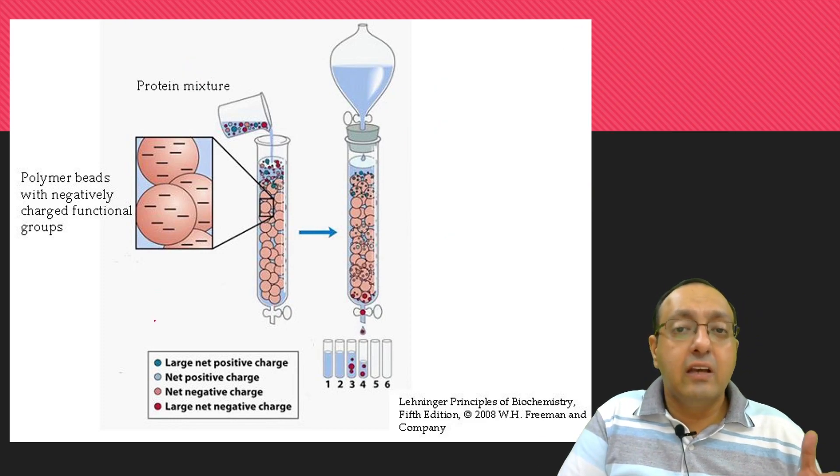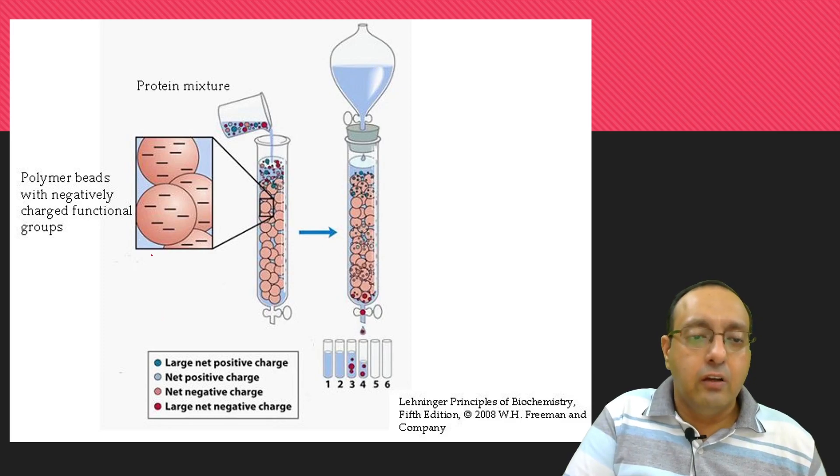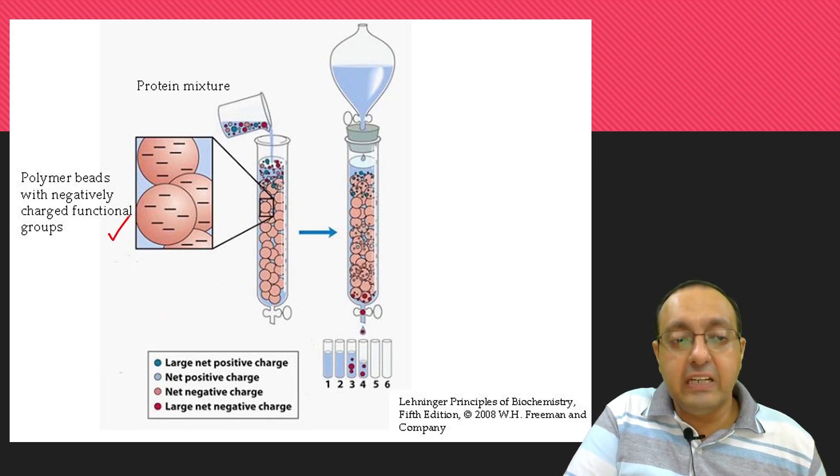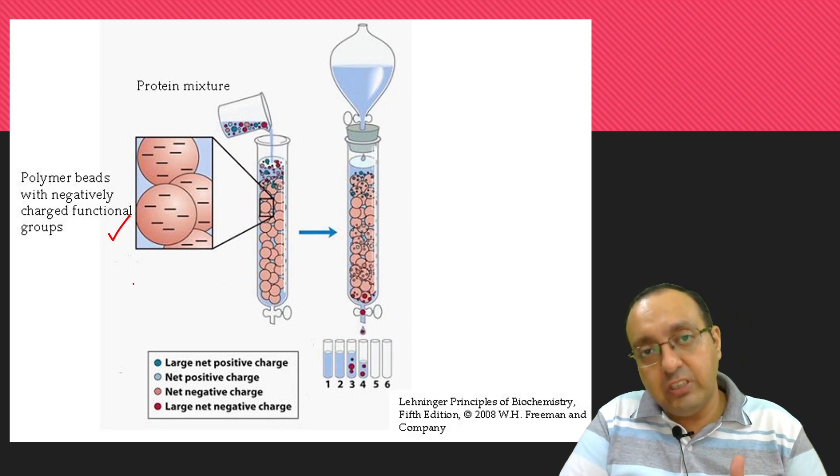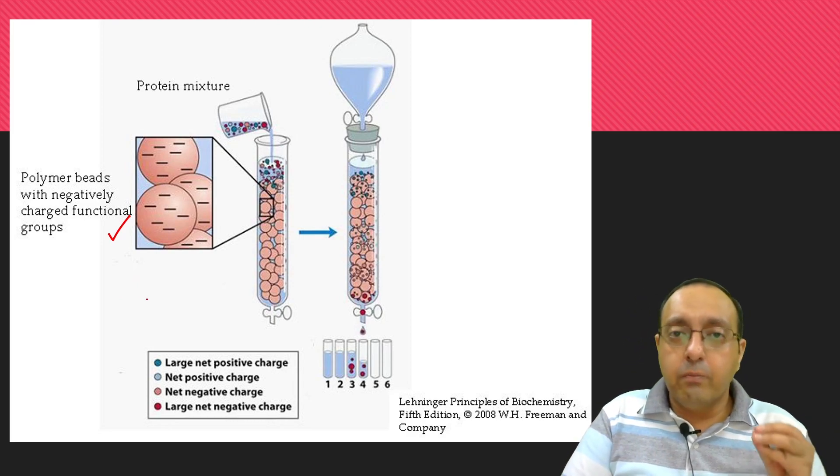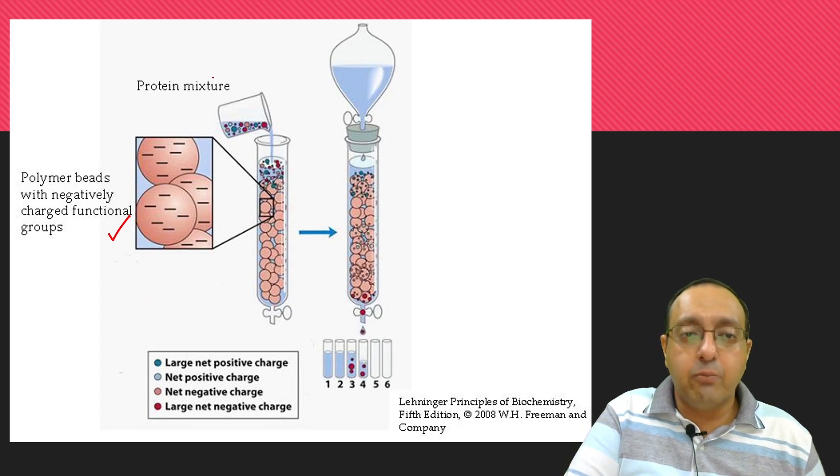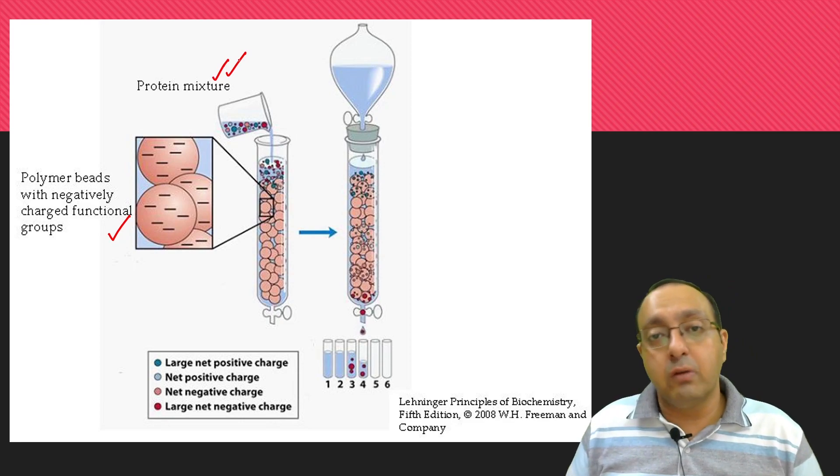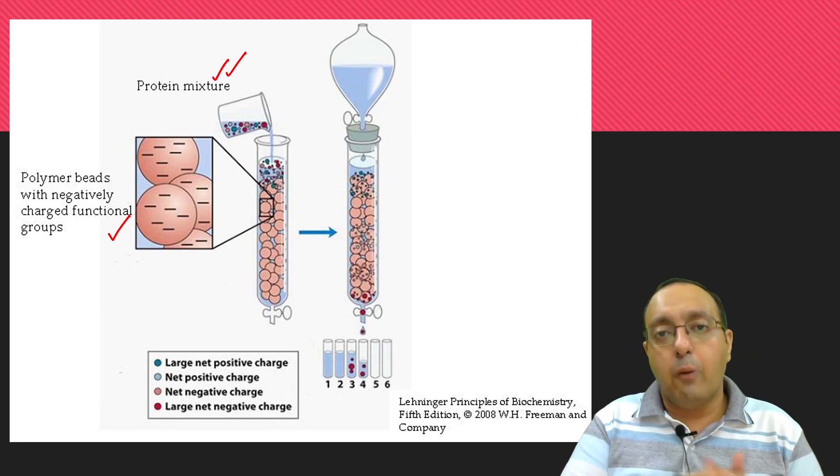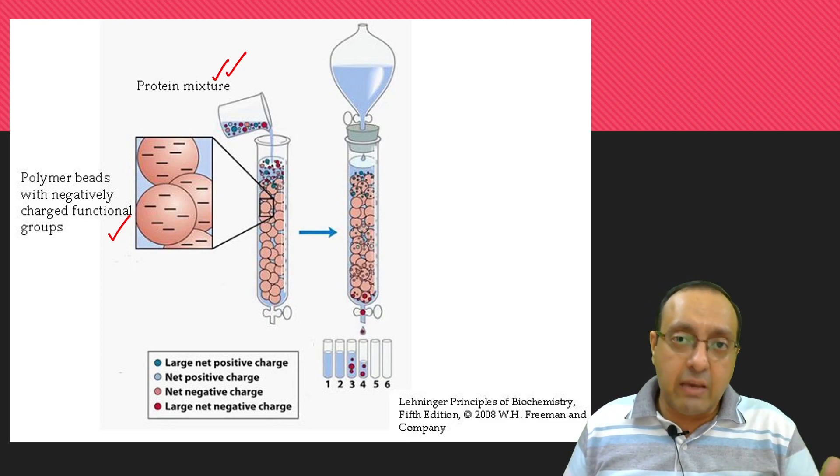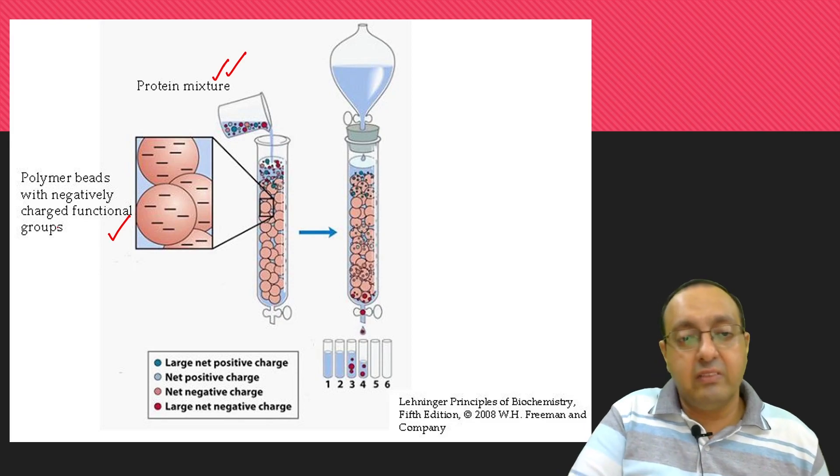As depicted here for cation exchange chromatography, we have the polymer beads with negatively charged functional groups and they like to bind positively charged proteins. Proteins with different positive and negative charges present in the protein mixture will bind to these polymer beads. Due to their interaction of opposite charges being attractive to each other, they will separate.